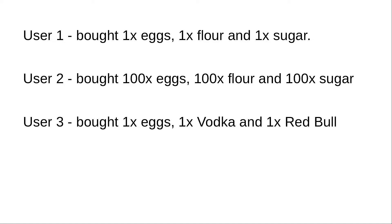By a cosine similarity metric, user one and user two are more similar because both bought the same items: eggs, flour, and sugar. It does not consider that user two bought 100x and user one bought 1x.